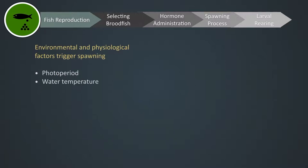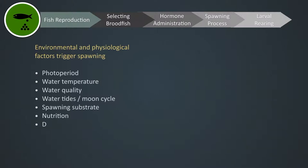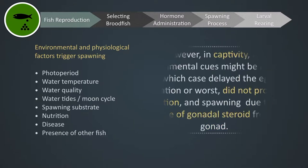Other environmental factors include water quality, water tides or moon cycle, spawning substrate, nutrition, disease, and presence of other fish. However, in captivity, the environmental cues might be lacking, which could delay egg maturation or, worse, result in no ovulation and spawning due to the absence of gonadal steroids from the gonad.